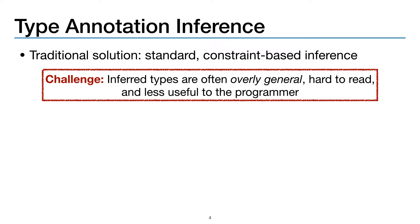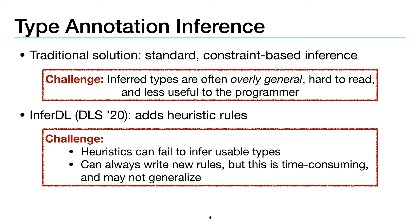Now the traditional solution to this problem is to use standard constraint-based type inference. But a key challenge here is that the inferred types are often what we call overly general, making them hard to read and less useful to the programmer. Recent work implemented a system called InferDL that complements constraints with heuristic rules. And while this helps, heuristics can often fail to infer usable types, and writing new heuristic rules is time-consuming and may not generalize to new programs.